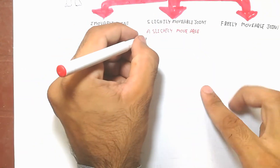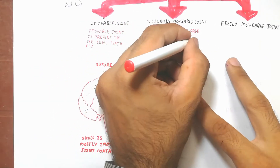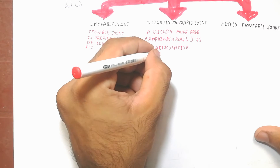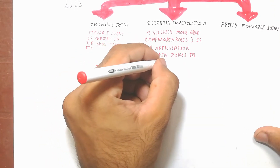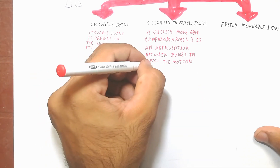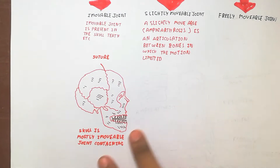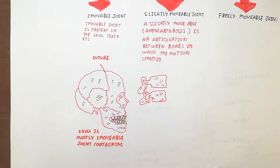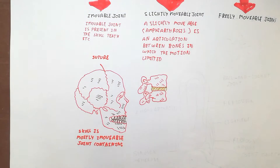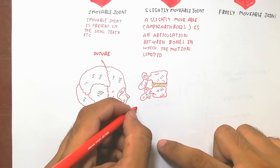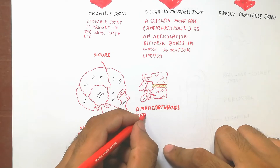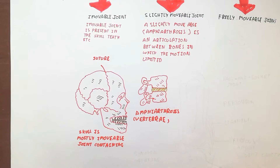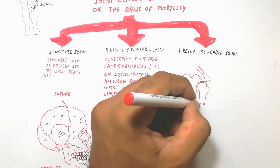Now we will discuss about the slightly movable joint. The slightly movable joint does not have too much movement — only slight movement. Amphiarthrosis is known as an articulation between bones with motion basically limited. The vertebrae contain a slightly movable joint — amphiarthrosis vertebrae — so slightly movable joints are included here.